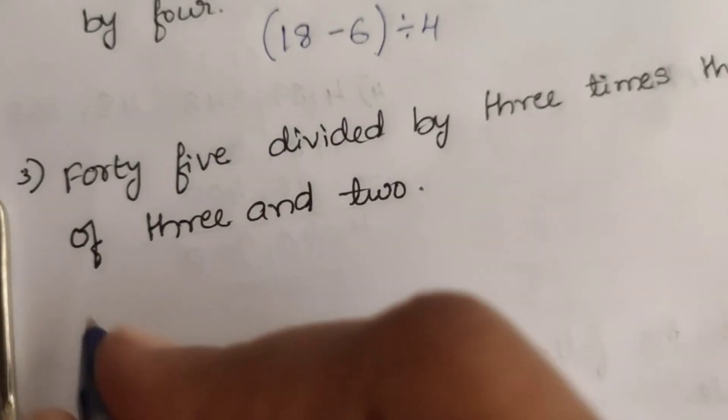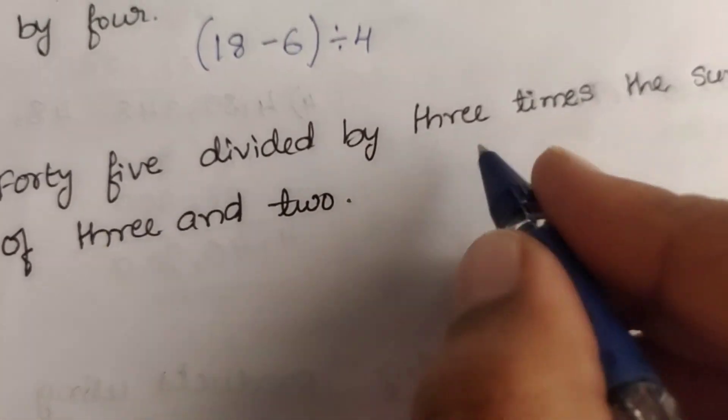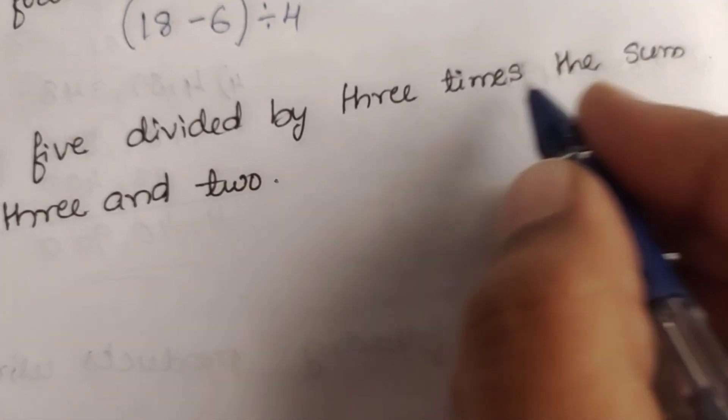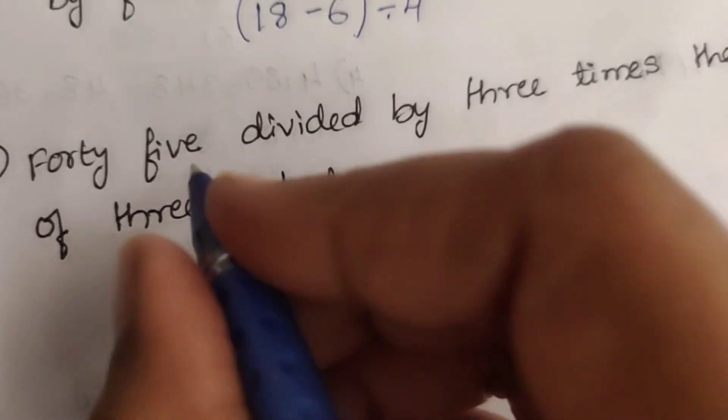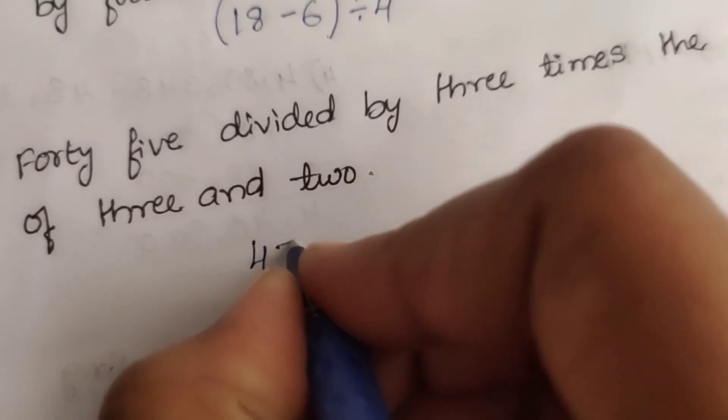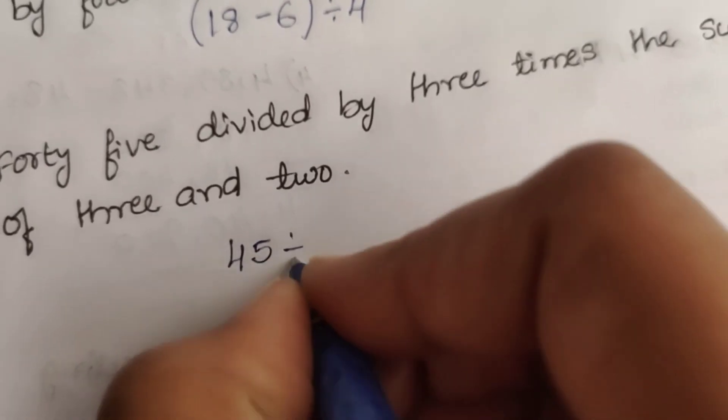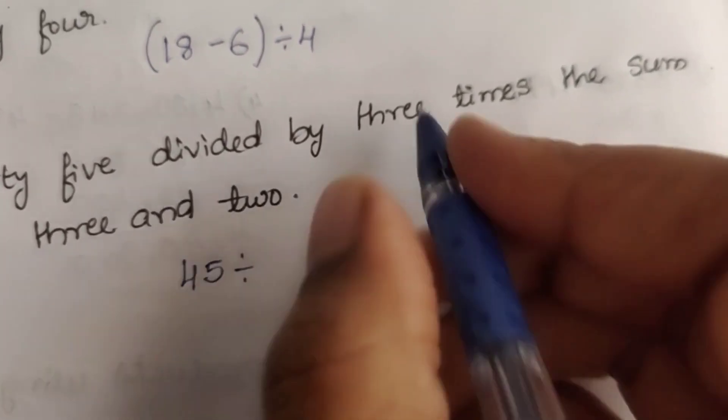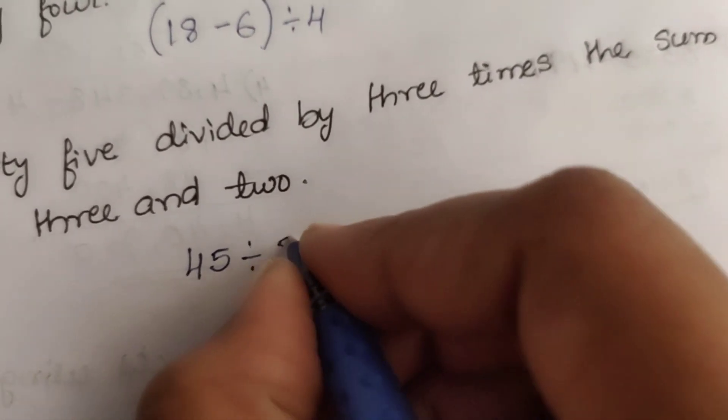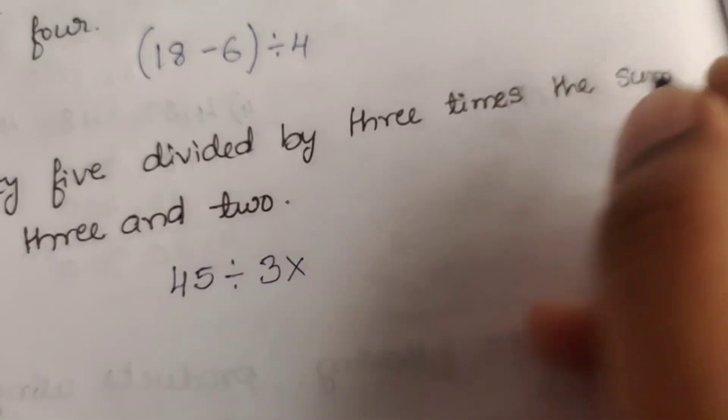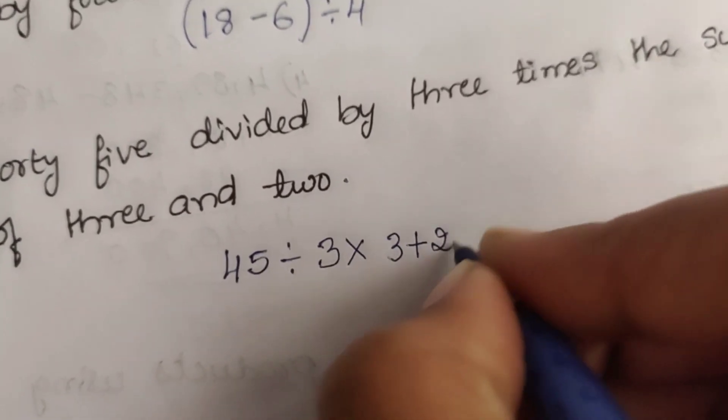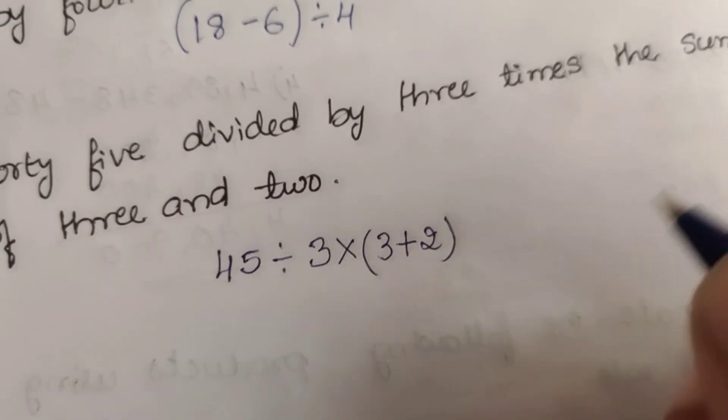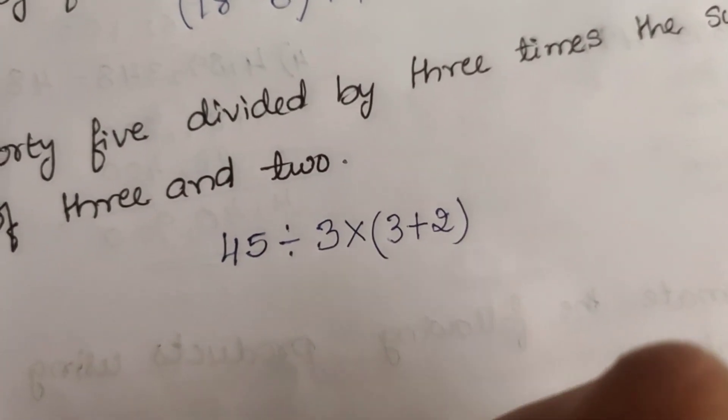45 divided by 3 times the sum of 3 and 2. So 45 divided by 3 times, and 3 and 2 go in brackets.